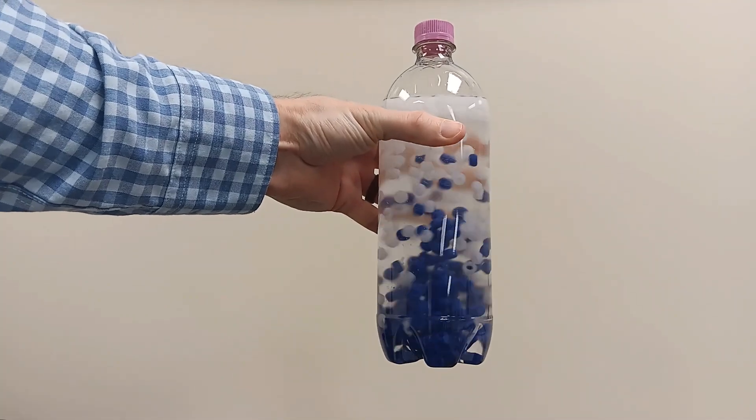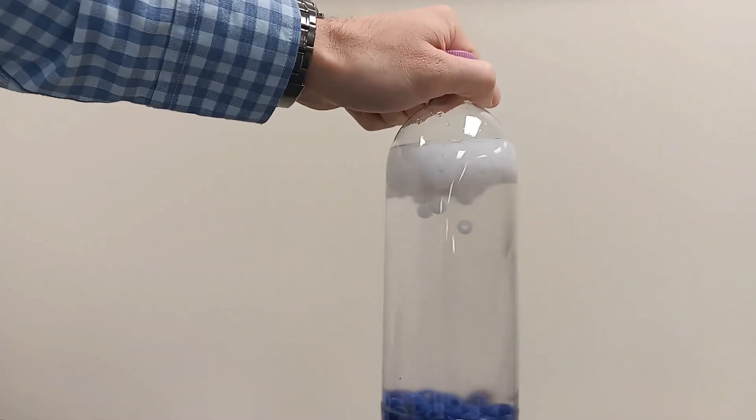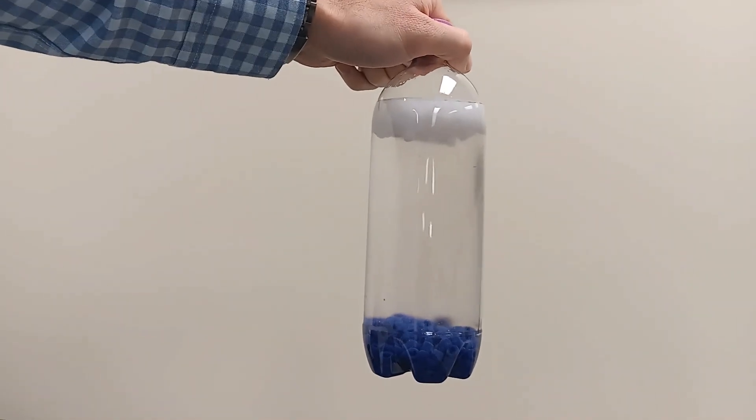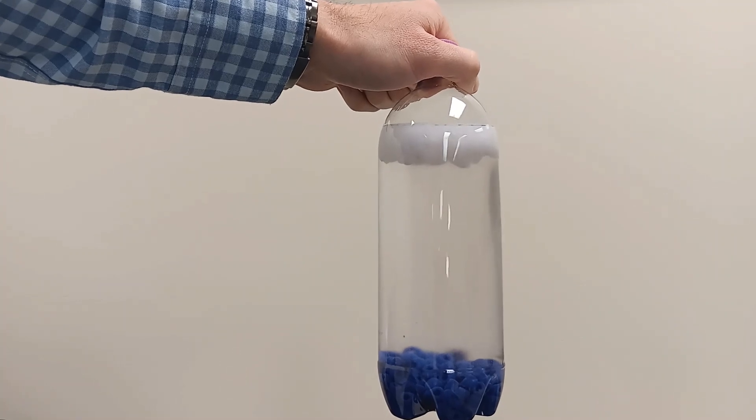And once you shake it up, you'll notice that the blue beads are going to settle onto the bottom. The white beads are going to rise to the top. So definitely we know the blue beads are more dense, the white beads are less dense.